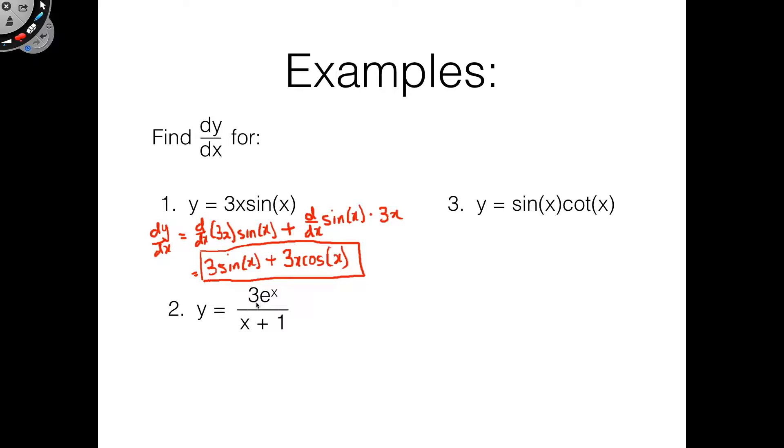And next one over here. This is 3e^x times (x+1). We're going to use a little jingle that I learned which is pretty convenient for memorizing the quotient rule. So dy/dx is going to equal low, which is the lower function, d high, the derivative of the upper function, all over low squared.